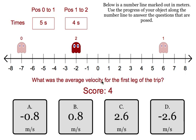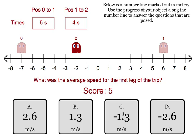Okay, it wants the average velocity for the first leg of the trip. With velocity, you do have to worry about direction. So he went to the right. He covered from negative 7 to positive 6, so that's 13 meters, and he did so in 5 seconds. So that is almost 3 meters per second. So that's to the right, so we picked positive 2.6.